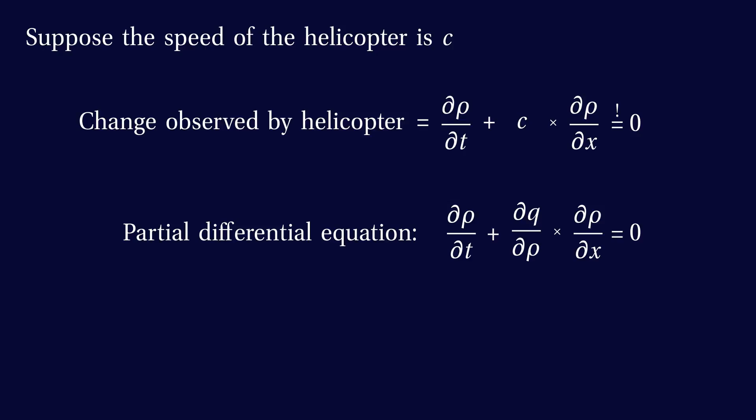If we compare this to the partial differential equation for the traffic density, we see that the equations are almost the same. In particular, if c is equal to dq/drho, then the helicopter will see no change in density. And this is exactly what we want. So this is the formula for the speed of the helicopter, or in more abstract terms, for the slope of a characteristic.